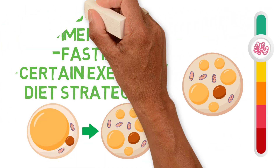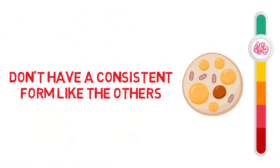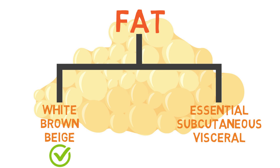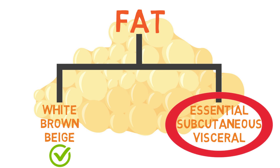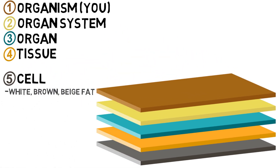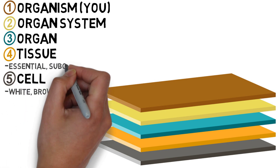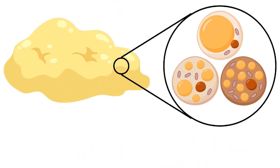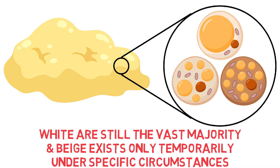However, beige adipocytes don't have a consistent form like the others — they quickly return to their original white condition when whatever external stimulus triggered the change is removed. One way of thinking about the two subclassifications is that white, brown, or beige fat occurs at the cell level, while essential, subcutaneous, and visceral fat refer to types of fat at the tissue level. Each type of fat tissue may contain varying proportions of white, brown, and beige adipocytes, though white cells are still the vast majority and beige exists only temporarily under specific circumstances.